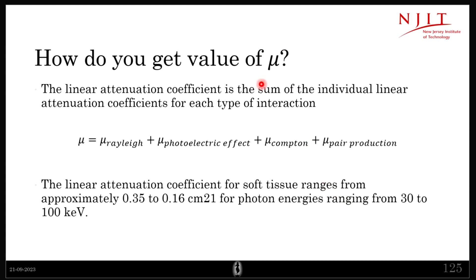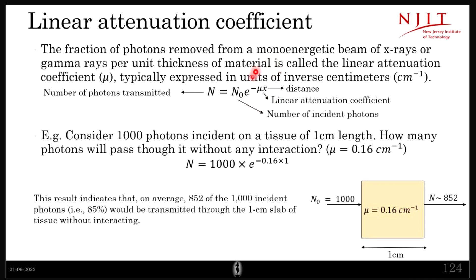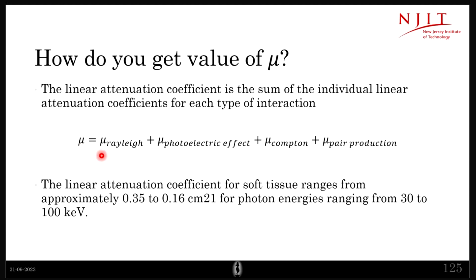The value of mu, the linear attenuation coefficient, is simply the sum of the coefficients from the different interaction effects we studied. For soft tissue, mu ranges from about 0.35 to 0.16 cm⁻¹. The units of linear attenuation coefficient are centimeter inverse.